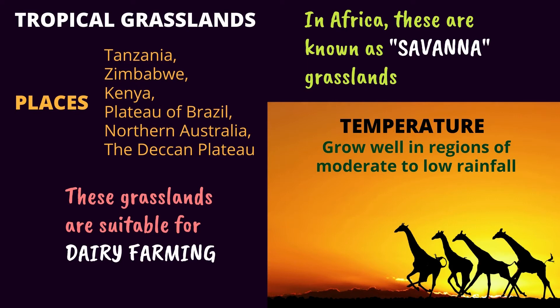These grasslands are suitable for dairy farming. In Africa, the tropical grasslands are known as savannah.